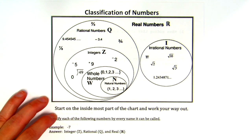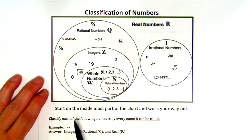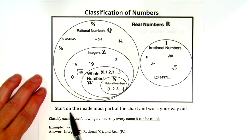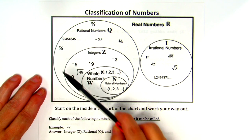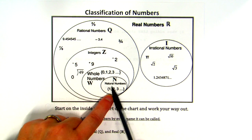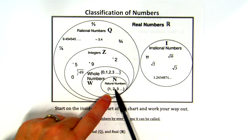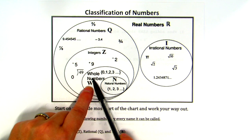You've probably done Venn diagrams in English class to organize concepts. The way this works — start on the innermost part of the chart and work your way out. We're going to give you numbers and you'll have to classify them. For example, negative three — you go to the innermost part, which says natural numbers, showing one, two, three, four, five. Would a negative number be in here? No.